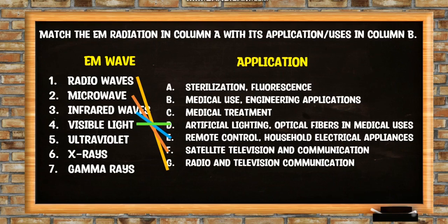Correct! Visible light is used as artificial lighting and for optical fibers in medical uses. Next, we have the ultraviolet. What do you think is the application of the ultraviolet rays? Yes, sterilization and fluorescence.